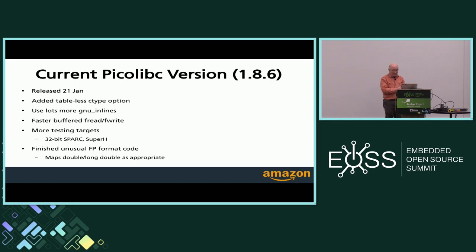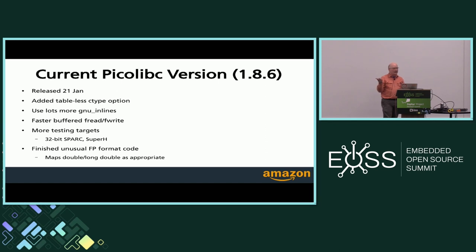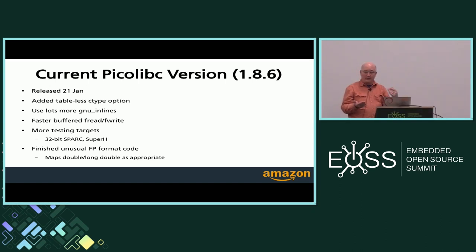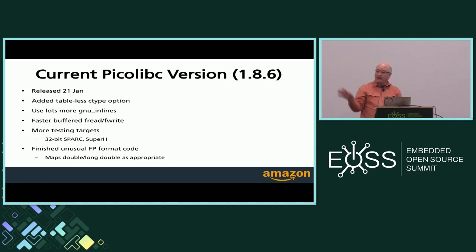The tableless ctype implementation gets rid of the table. Another thing 1.8.6 does is normalize the use of the GNU inline semantic, which allows you to declare a function inline most of the time but also provide a version in the library for external linkage — so if you need a function pointer, or your application doesn't happen to include the header, you can get both. That's not part of the C standard but is supported in both clang and GCC.